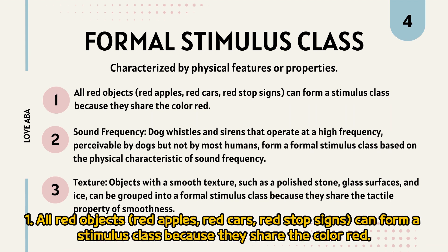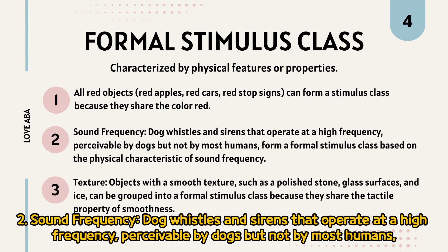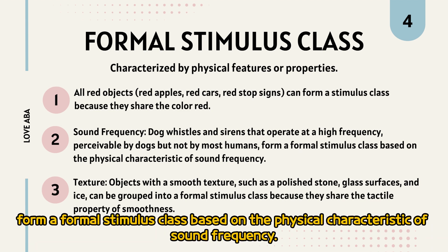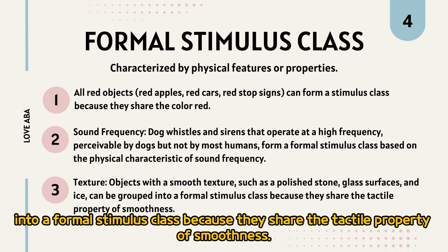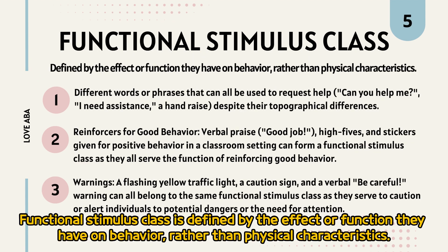A formal stimulus class is characterized by physical features or properties. For example: all red objects — red apples, red cars, red stop signs — form a stimulus class because they share the color red. Sound frequency — dog whistles and sirens operating at a high frequency perceivable by dogs but not most humans — also form a formal stimulus class. Objects with a smooth texture, such as a polished stone, glass surfaces, and ice, can also be grouped together.